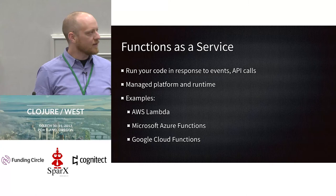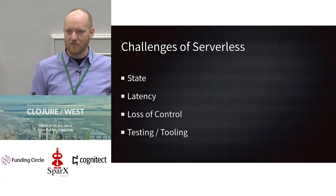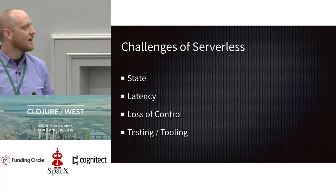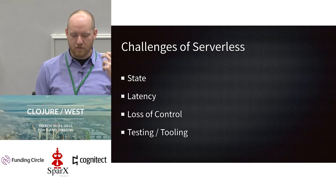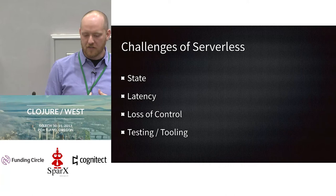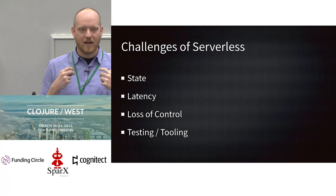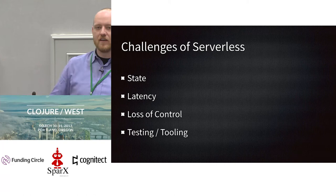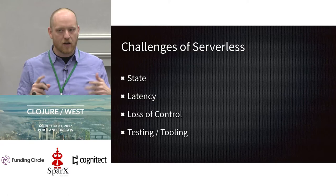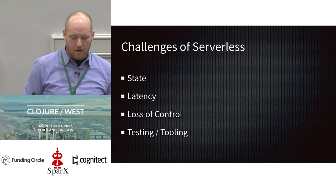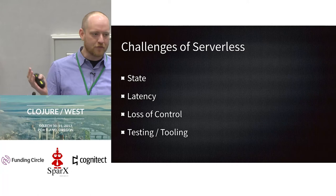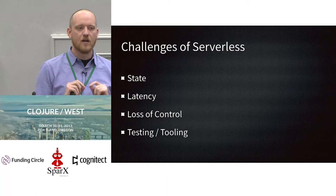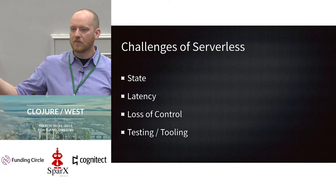Let's touch on the challenges, because there are plenty — it's not a panacea. When you have these little ephemeral components, state is a big challenge. Fortunately, as Clojure programmers, we're used to the trade-offs when dealing with state. An example we like to bring up is the Heroku 12-factor model where you offload state from your processes to a database, and you count on the ability to kill a process or bring it back up whenever you like. Latency is another huge challenge — lots of little components talking to each other over networks adds up, so very low latency applications may not be a good choice.